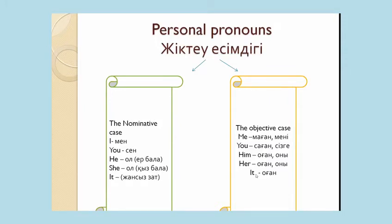Жүктеу есімдігі. Балар, жүктеу есімдігі қазақ тілінде жалпы мен, сен, ол, олар деп үш жаққа айтылады. Біз бүгін жүктеу есімдігінің жекеше түрмен бірінші танысайық. Ағылшын тілінде жүктеу есімдігін personal pronouns дейді. Ағылшын тіліндегі жүктеу есімдігінің өзі екке бөлінеді: nominative case және objective case.